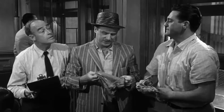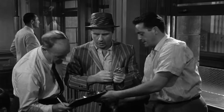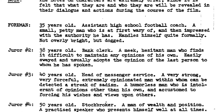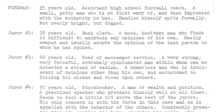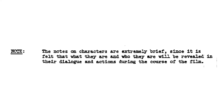In the film of 12 Angry Men, they make it a point to not reveal any of the jurors' names. I checked Reginald Rose's screenplay, and sure enough, the characters are simply named by juror number. There's also a note from the screenwriter himself: 'The notes on characters are extremely brief, since it is felt that what they are and who they are will be revealed in their dialogue and actions during the course of the film.'